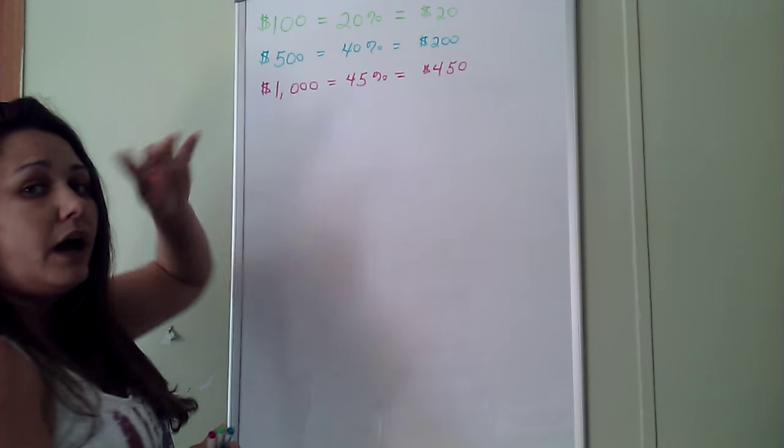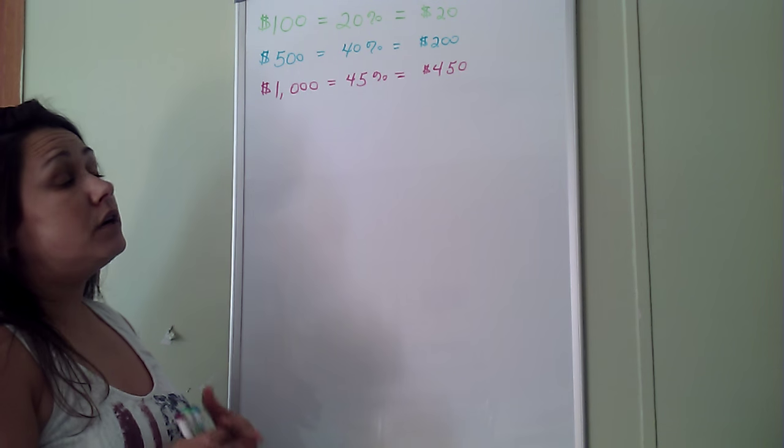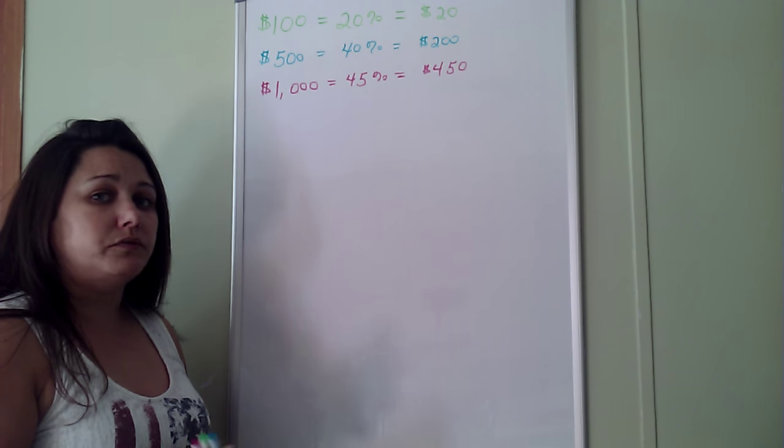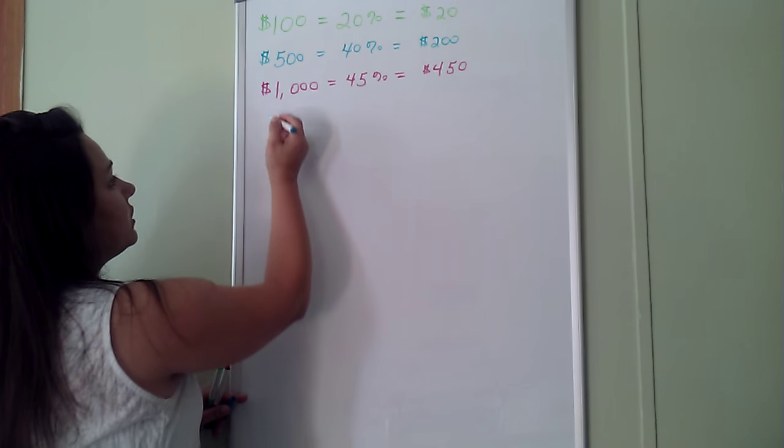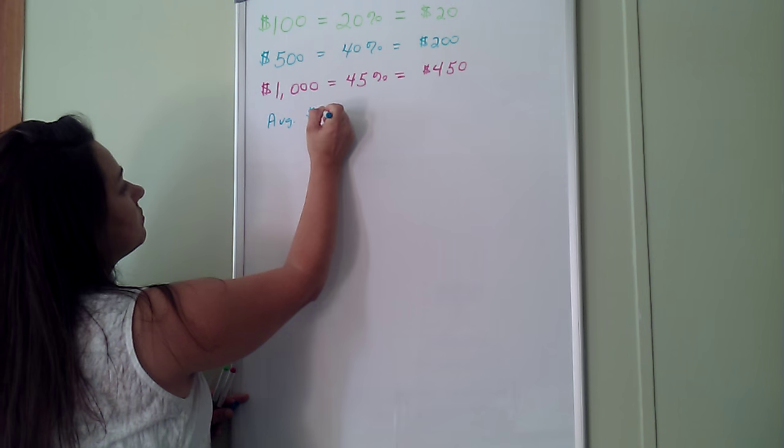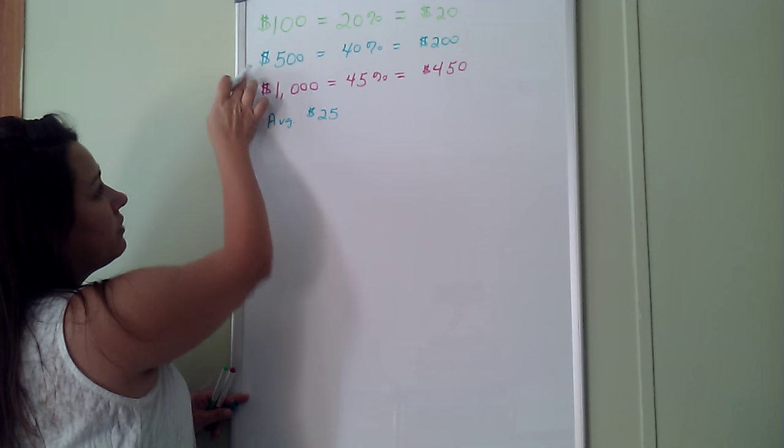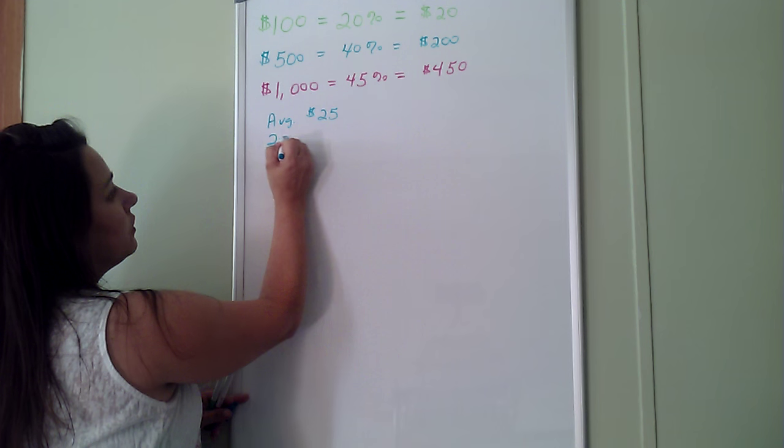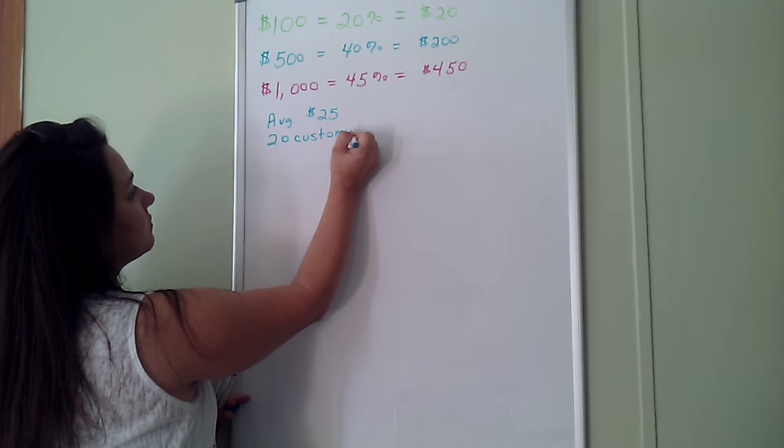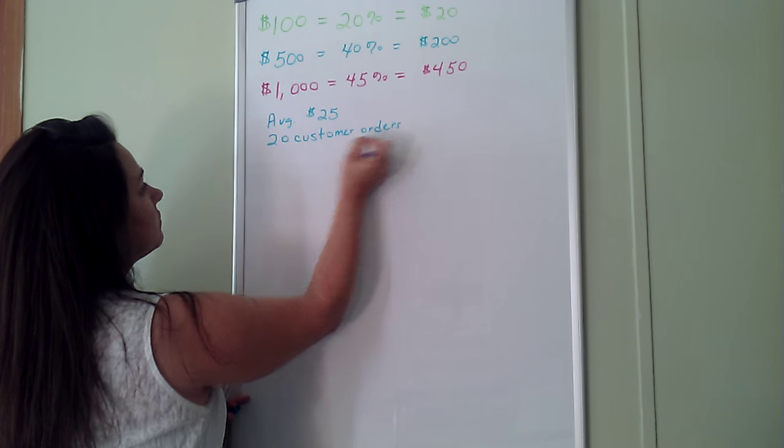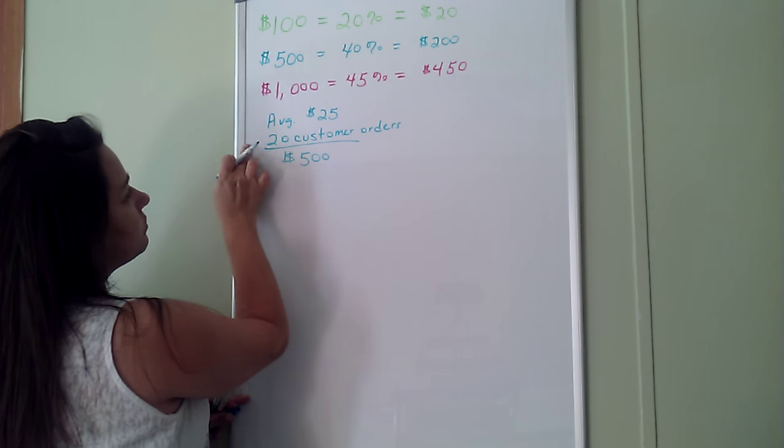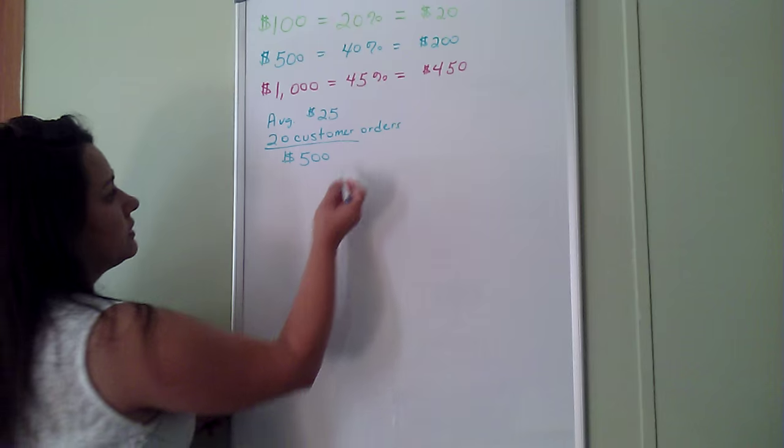We're going to go through and show you how to get a $500 order and a $1,000 order and how to reach those. An average order with Avon is $25, and in order to have a $500 order, you will need 20 customer orders. 20 customers times $25 equals $500 in sales.